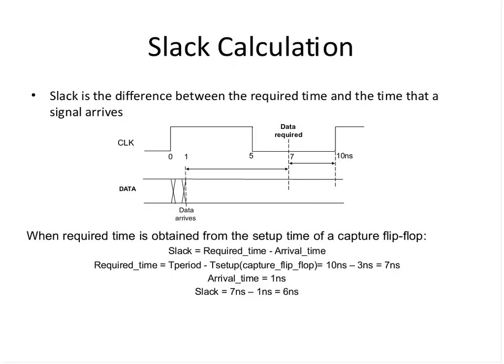Slack is the difference between the required time and the time when a signal arrives. For example, with a clock period of 10 ns, data arriving at 1 ns, and a setup time of 3 ns, the required time is 7 ns. Slack = required time - arrival time = 7 - 1 = 6 ns. This will be explored further in the lab.